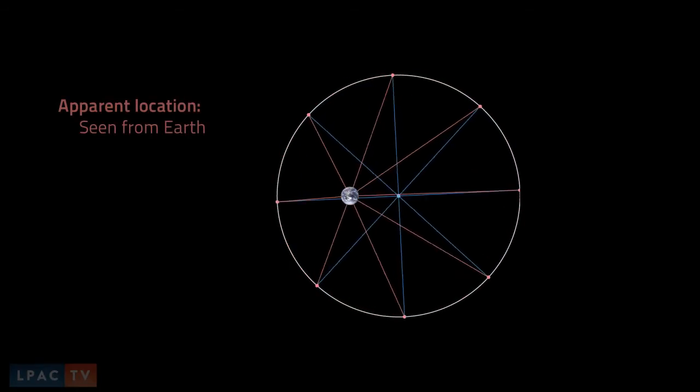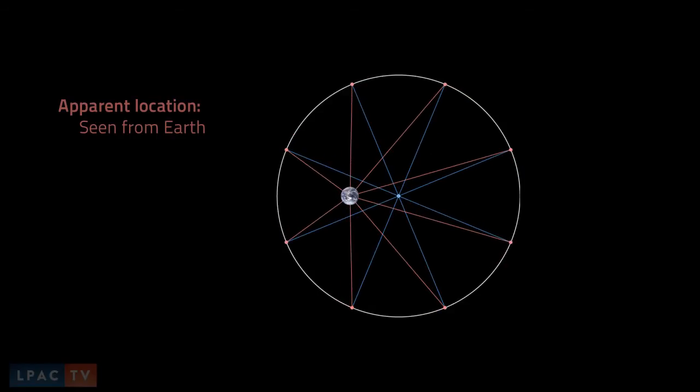Here, the red lines are the apparent positions, as seen by the Earth, as they appear to us. And as you can see, the angle on the left, for the motion over a couple of months, is much larger than on the right, for the same amount of time.